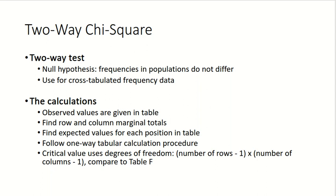To calculate the two-way chi-square, it's similar to the one-way, except now we have a more complicated way of coming up with the expected frequencies. We start with our observed values in the table, the crosstab, find row and column margin totals, find expected values based on those, and then follow a one-way tabular calculation procedure.